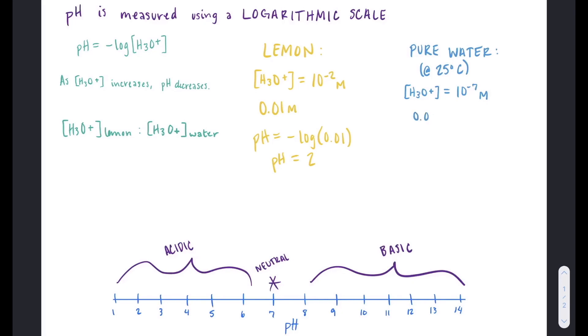And if we do the same thing for pure water and then put that into the pH equation, the pH equals 7.